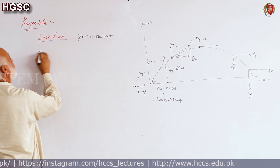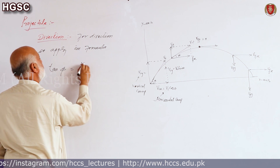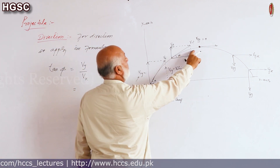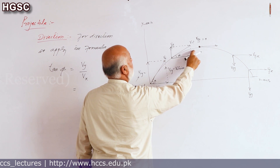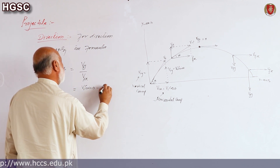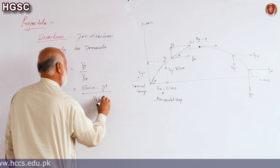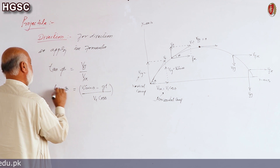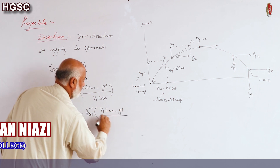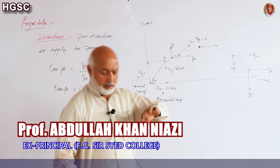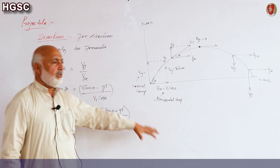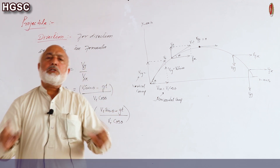To find the direction of the velocity at any time, we apply: tan phi = Vy / Vx = vfy / vfx = (vi sin theta − gt) / (vi cos theta). Therefore, phi = tan⁻¹[(vi sin theta − gt) / (vi cos theta)]. This completes the full discussion of projectile motion — we have derived both the magnitude and direction of the velocity at any time.